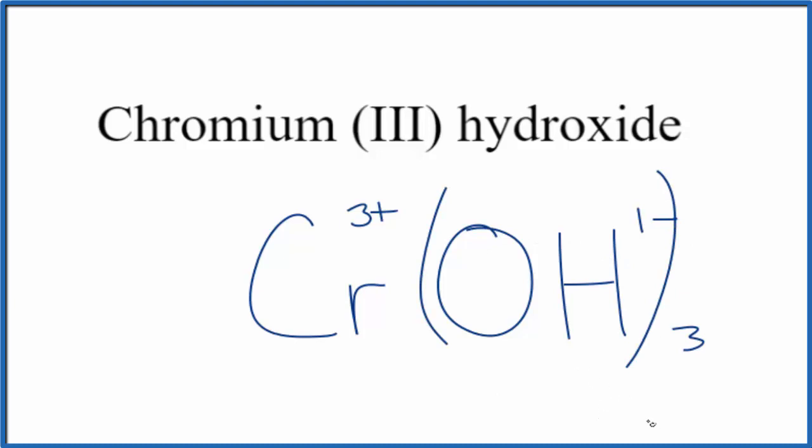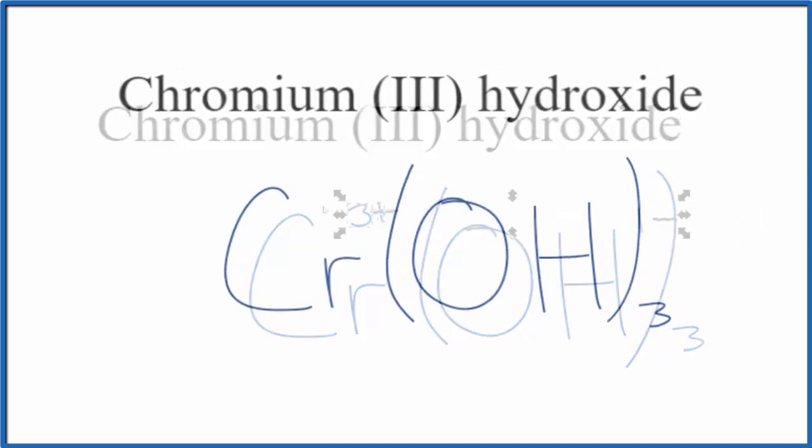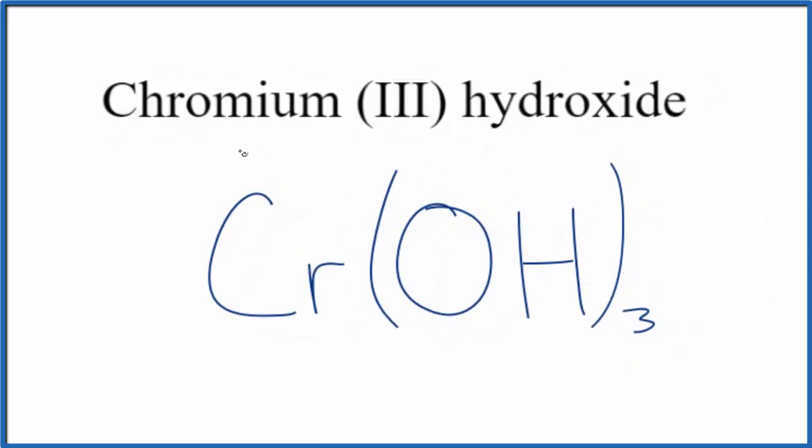So this is the formula for chromium three hydroxide: Cr(OH) in parentheses three. Let me clean this up a bit. And there you have it, the formula for chromium three hydroxide. This is Dr. B and thanks for watching.